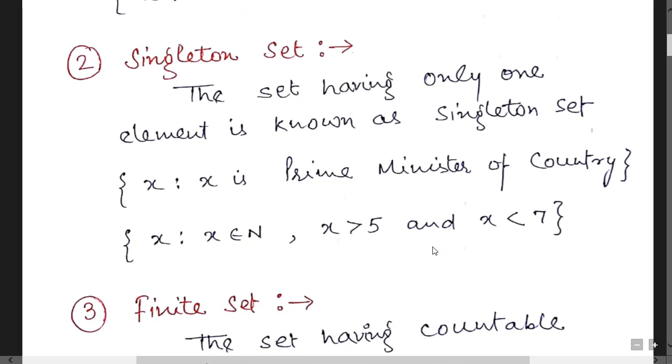Second type of set is singleton set. Actually it came from the word single. Single means having one element. The set having only one element is known as singleton set. X is a prime minister of the country, it's a single. X such that x is natural number and x greater than 5, x less than 7, it's number 6. In this way you can represent singleton set.